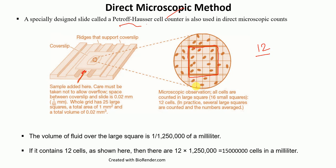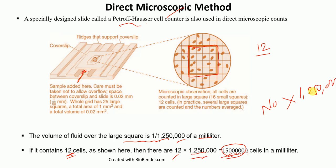The volume of the fluid over the large square is 1/1250 of a cubic millimeter. So if the large square contains 12 cells, then the total count is 12 multiplied by this conversion factor, giving 1,500,000 cells. We just need to multiply the number seen in the large square by 1.25 × 10⁵. Instead of counting only one large square, we can count multiple large squares, average the counts, and then multiply that average by this factor.